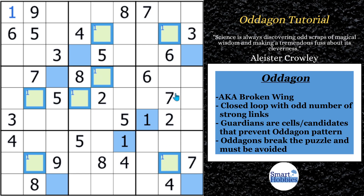Each cell has a strong link with the next: if this is false, that has to be a 1. You go strong here, strong here — there's only 2 within this block, so that's a strong link, and up here is strong. But there are 7 strong links total, and this is not good. This is called the autogon. So putting a 1 in the top left corner creates a closed loop of 7 cells with all strong links of 1s. That cell — row 1, column 1 — is called a guardian: a cell candidate that prevents the autogon pattern.